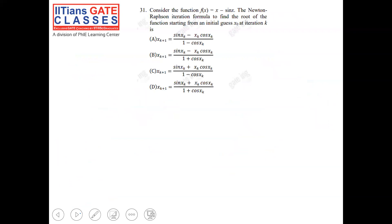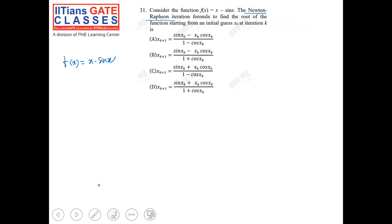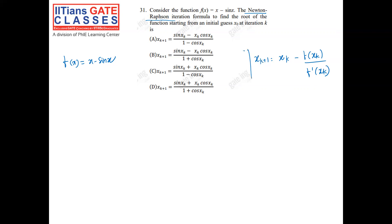Coming to the next question, which is from numerical methods based on the Newton-Raphson iteration formula. They have given the function f(x) = x - sin(x) and are asking us to find the Newton-Raphson iteration formula for the root of this function. The Newton-Raphson formula is: x_{k+1} = x_k - f(x_k) / f'(x_k).